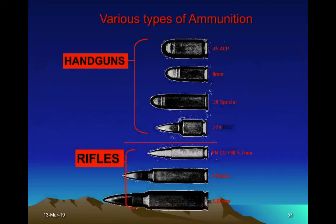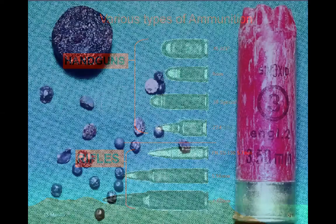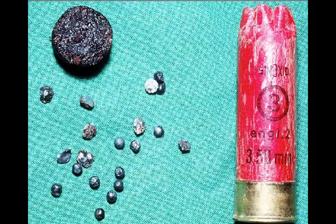These diagrams show different shapes of rifled bullets — the upper ones are for handguns or small weapons, and the lower ones are for rifles. This picture shows the smoothbore cartridge: on the right side is the complete shell, on the left are the pellets, and above is the wad.